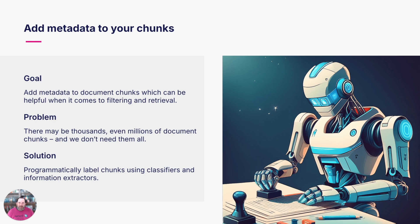But of course if you have thousands of documents, that means you could have hundreds of thousands, potentially millions of chunks, and we're certainly not going to be able to add metadata to those one at a time. The good news is that with platforms like Snorkel Flow, we can do that programmatically using classifiers and information extractors. So in a matter of minutes, we can extract that metadata and add it back as labels to those chunks regardless of how many there are.